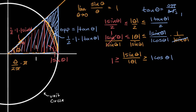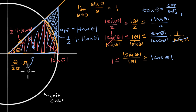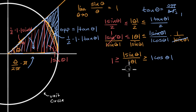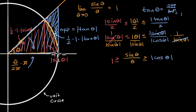We care about the first and fourth quadrants — theta approaching zero from either direction. In the first quadrant, sine of theta and theta are both positive. In the fourth quadrant, they're both negative, but their ratio is positive. So the absolute value signs on sine of theta over theta are unnecessary. Similarly, cosine of theta is not negative in the first or fourth quadrant, so we can drop those absolute value signs too.